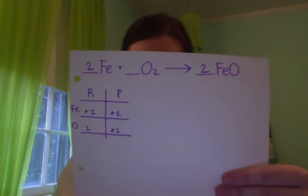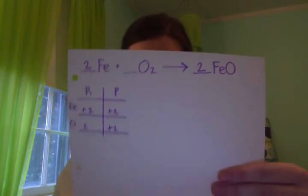Now oxygen is balanced but the iron isn't, so I'm going to add a two in front of the iron in the reactant. So then it looks like this. And that is the final balanced equation.